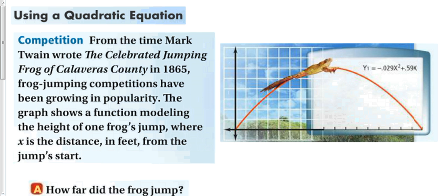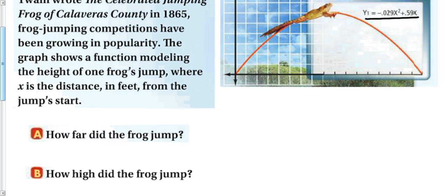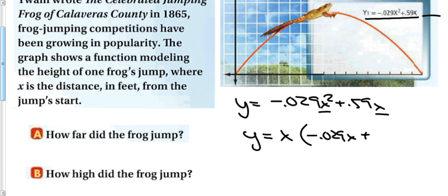From the time Mark Twain wrote the celebrated jumping frogs of Calaveras County in 1865, frog jumping competitions have been growing in popularity. The graph shows a function modeling the height of one frog's jump, where x is the distance in feet from the jump start. And here is my function, y equals negative 0.029x squared plus 0.59x. Well, this problem is not so complicated because it doesn't have a constant term over here. So we can write this y equals negative 0.029x squared plus 0.59x. I should notice that both of these have an x in common. So y is going to be equal to x times negative 0.029x plus 0.59.